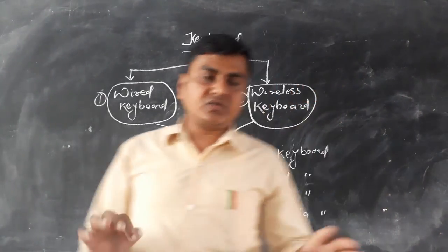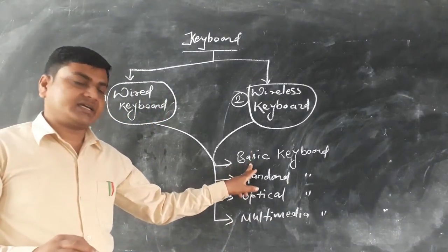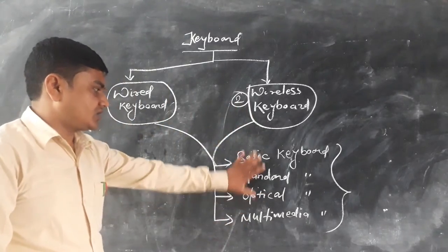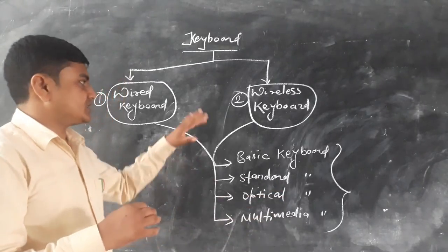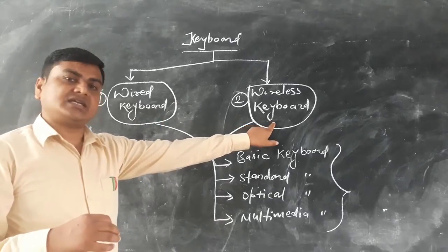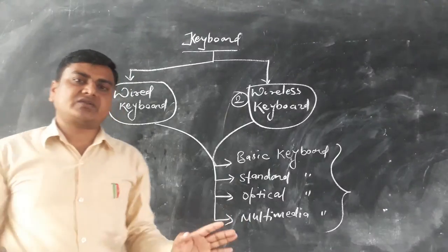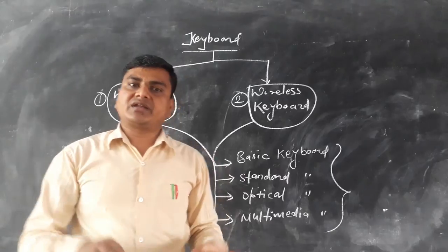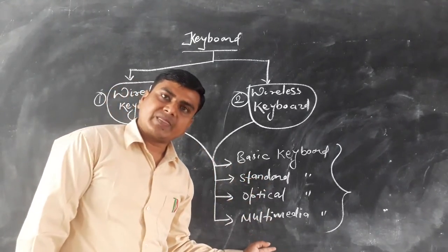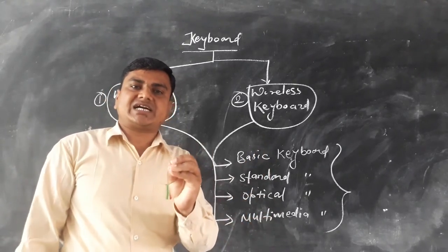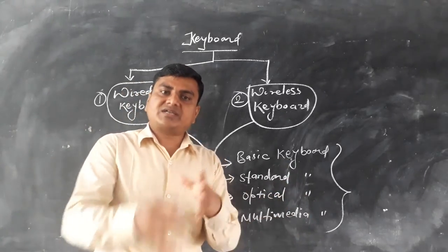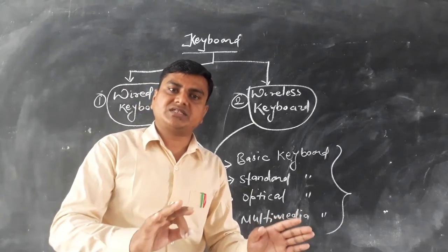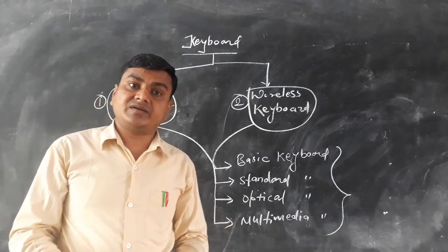Finally, all keyboards — whether basic, standard, optical, or multimedia — are categorized into two categories: wired keyboard and wireless keyboard. In summary, keyboards are the input device of a computer which is used to type text, alphabets, and numbers. In these categories, a few additional keys are added for extra functions. For example, on a multimedia keyboard, all the basic keys are present, plus multimedia keys like play, pause, forward, and reload are also available.